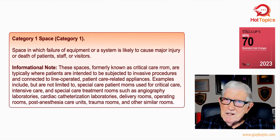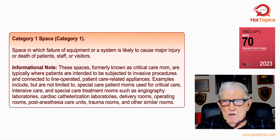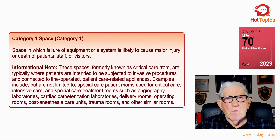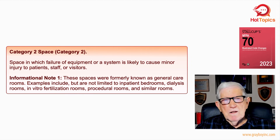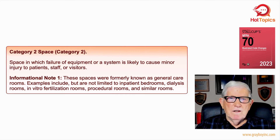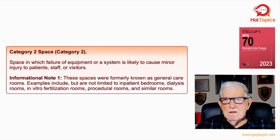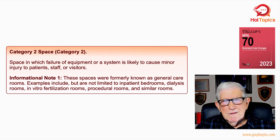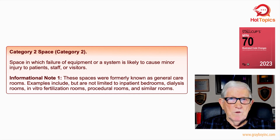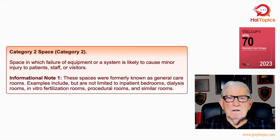So they're saying these receptacles are limited to these areas, or a similar area where the engineer designates it as such, or a contractor doing the work — subject to the approval of the authority having jurisdiction. Category 2 is a space in which failure of equipment or system is likely to cause minor injury to patients, staff, or visitors. These spaces were formerly known as general care rooms, and examples include — but are not limited to — inpatient bedrooms, analysis rooms, and similar rooms, designated by an engineer or contractor having authority, always subject to approval of the authority having jurisdiction.